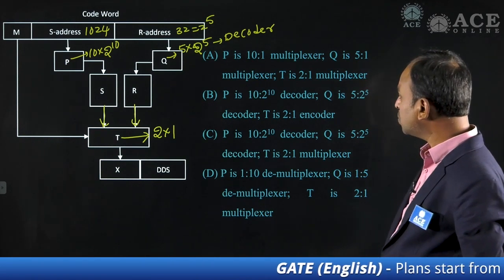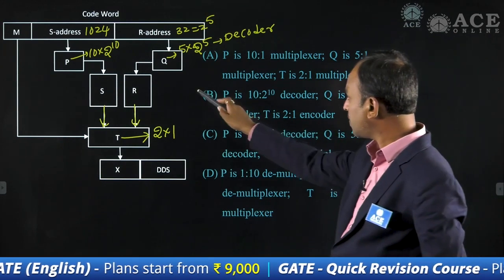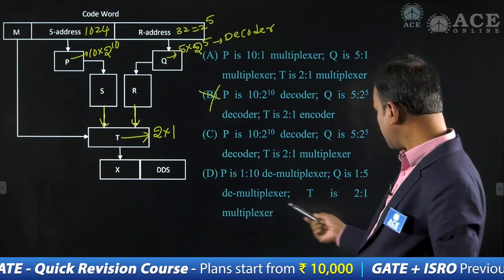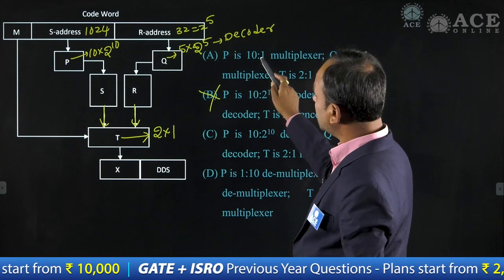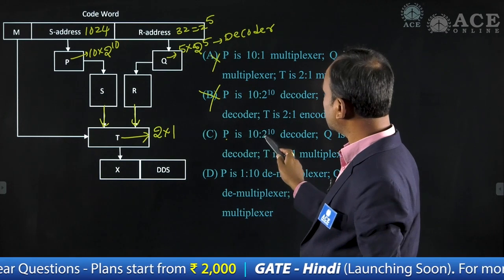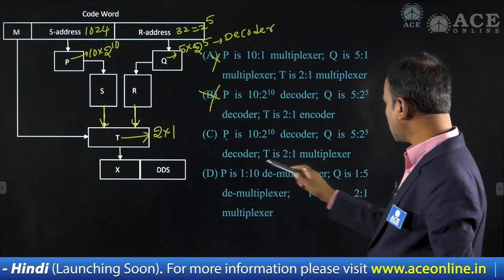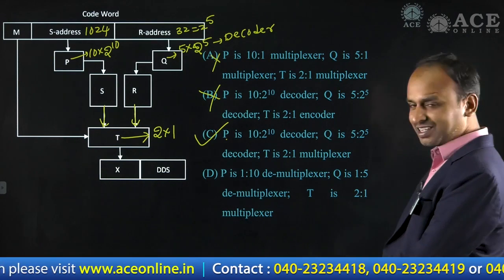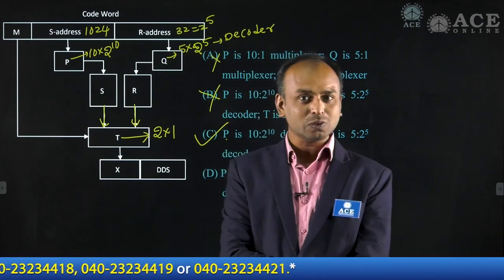Since there are two inputs, a 2-to-1 MUX is required, so T equals a 2-to-1 multiplexer. Checking the options: option B has T as a 2-to-1 encoder — wrong. Option C has P as a 10-to-2^10 decoder, Q as a 5-to-2^5 decoder, and T as a 2-to-1 multiplexer — that is correct. Option C is the correct answer for this GATE 2022 Computer Science Digital Logic question.